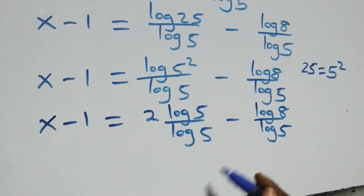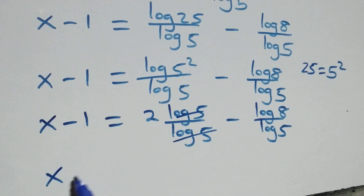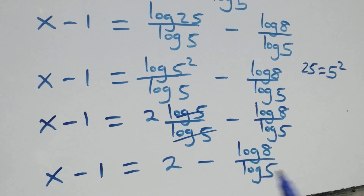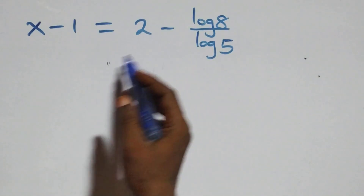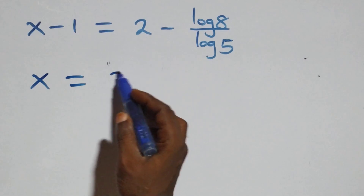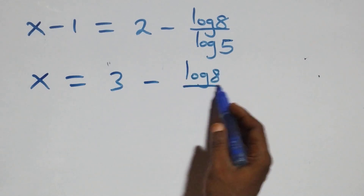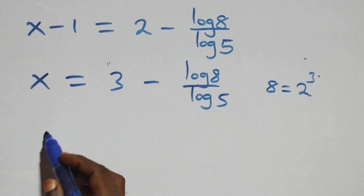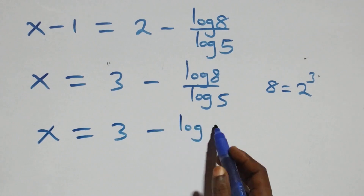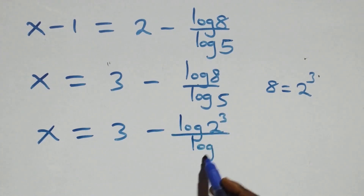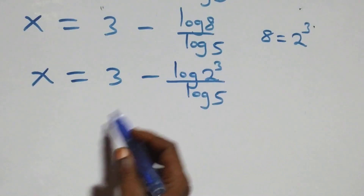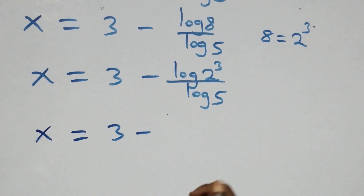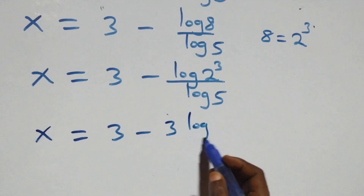Taking minus one to the right-hand side gives x equals 2 plus 1, which is 3, minus log 8 over log 5. Since 8 equals 2 times 2 times 2, which is 2 raised to the power 3, we have x equals 3 minus log(2 raised to power 3) over log 5. Applying the power rule, the 3 comes down: x equals 3 minus 3 log 2 over log 5.